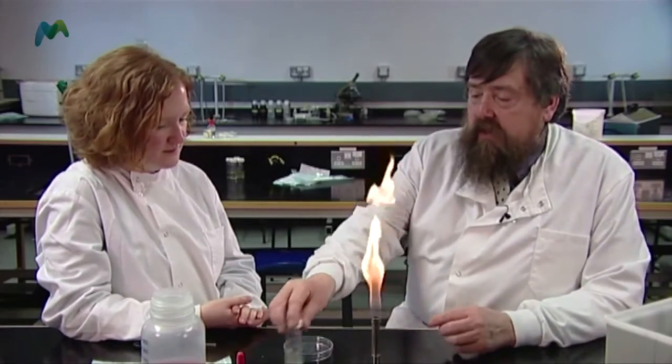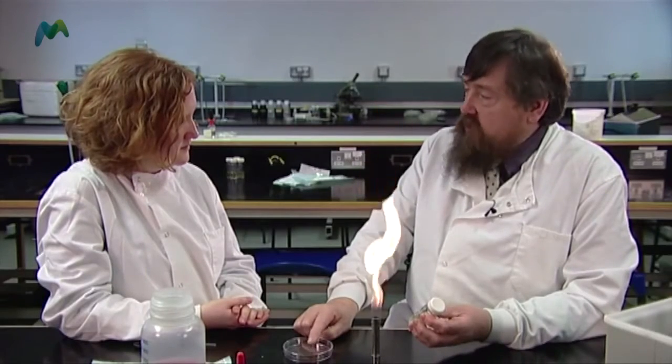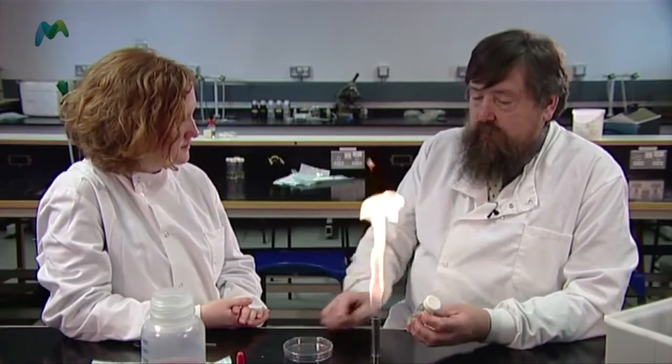What we're going to produce now is a pour plate. We're going to take some of this culture and put five drops in the bottom of this sterile petri dish. Then what we're going to do is take some of this molten nutrient agar that we've melted earlier and we've got it sitting happily in a water bath at 50 degrees Celsius.